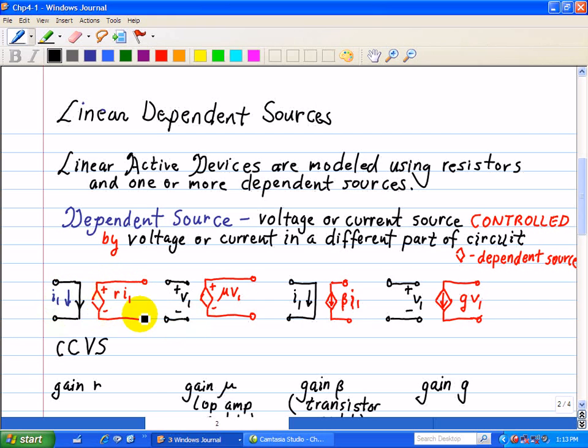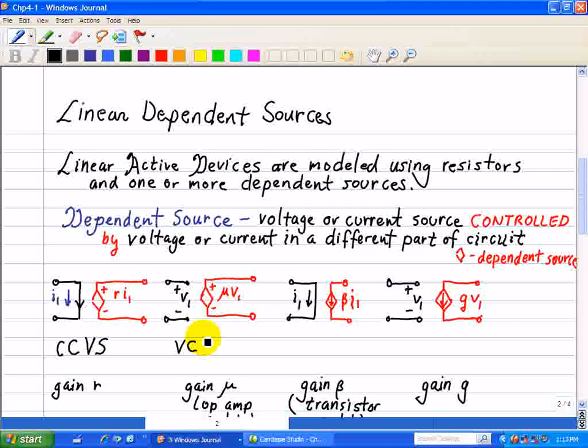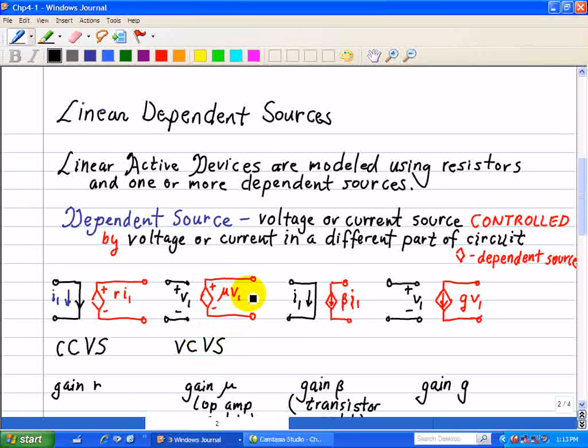Our next example changes the input from current to voltage. Here we have a voltage controlled voltage source, abbreviated VCVS.